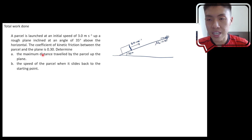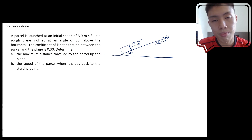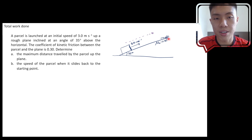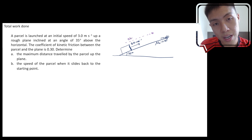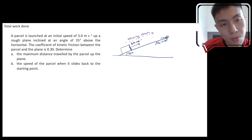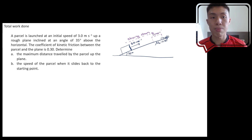They ask us to determine the maximum distance traveled by the parcel up the plane. The parcel will move up the plane, and because the plane is rough, it will be slowing down while moving along the plane. At some point it will slow down to a stop — somewhere up the hill with 0 meters per second.